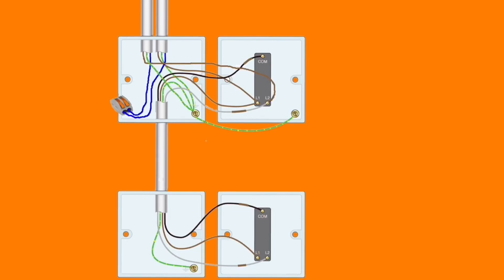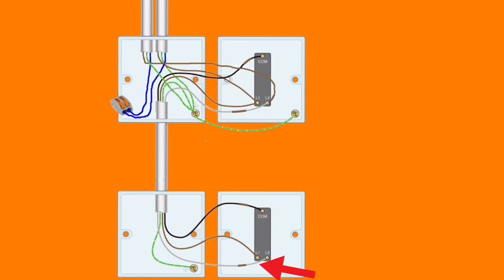We've introduced the three-core from the top switch to our new switching position. Both switches are now two-way switches, and the connections in the bottom switch are black for common identified with brown sleeving, with the brown conductor and gray conductor identified with brown sleeving into L1 and L2 - it doesn't matter which way around. We've now achieved two-way switching of our lighting circuit.